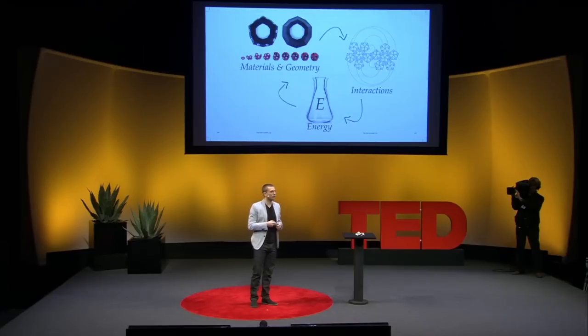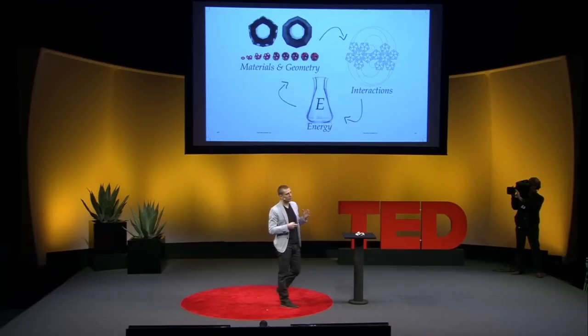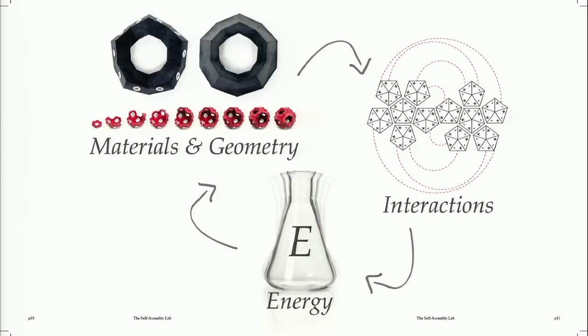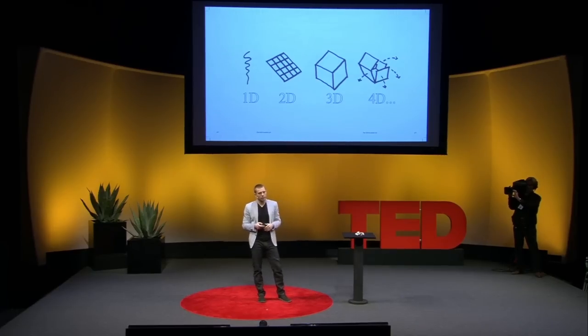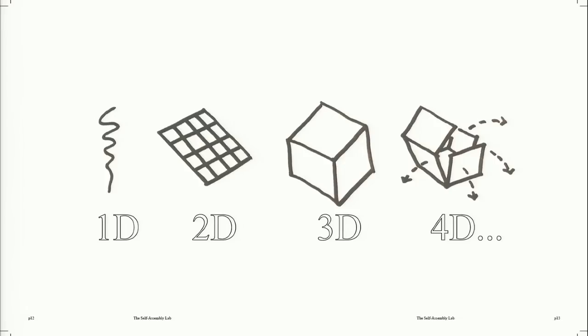So what do we need if we want to do this at the human scale? We need a few simple ingredients. The first is materials and geometry, tightly coupled with the energy source. You can use passive energy — heat, shaking, pneumatics, gravity, magnetics. And then you need smartly designed interactions that allow for error correction and allow shapes to go from one state to another. I'm going to show you projects built from one-dimensional, two-dimensional, three-dimensional, and even four-dimensional systems.